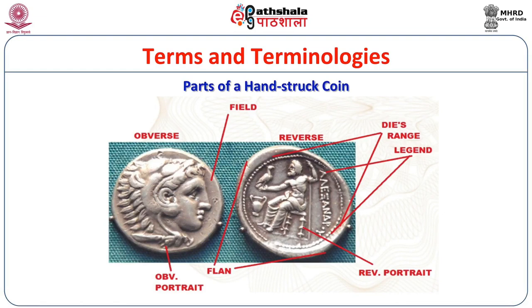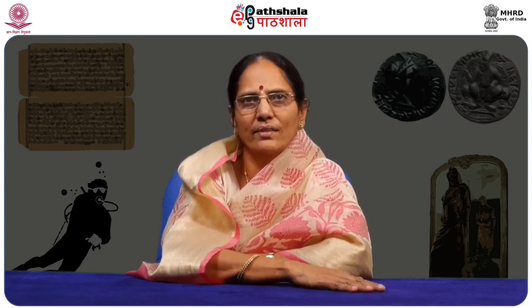On a hand-struck coin, the upper side shows a portrait of a king; the reverse side shows the planchet, portrait of a deity, die range, legend, and field. These are the parts of a hand-struck coin. You should now understand what obverse, reverse, field, legend, planchet, and portrait are, and how they appear on both old and new coins.